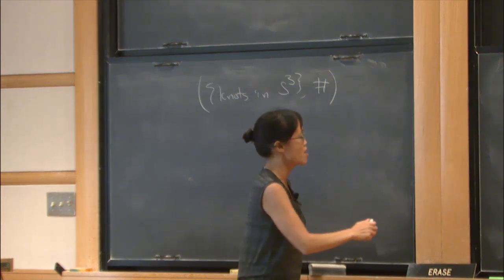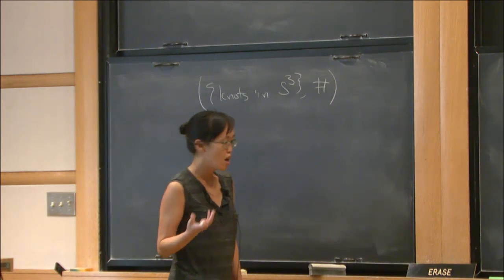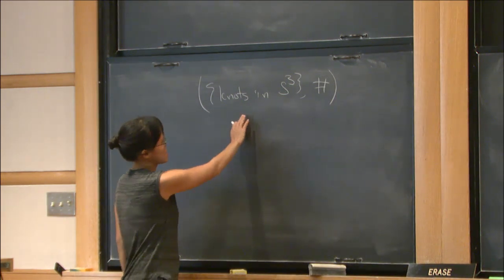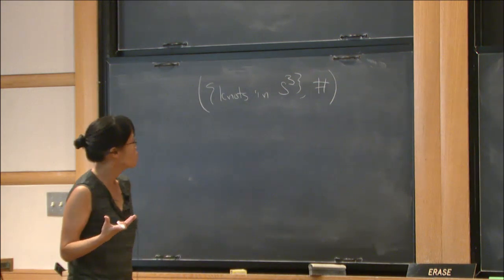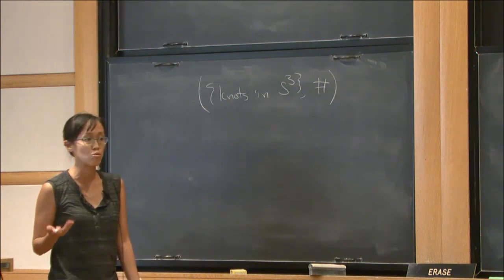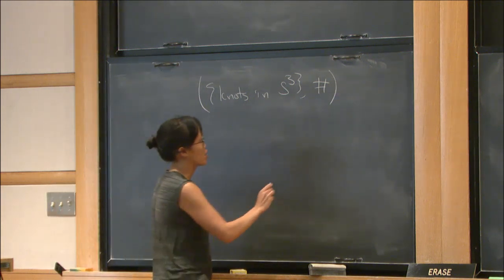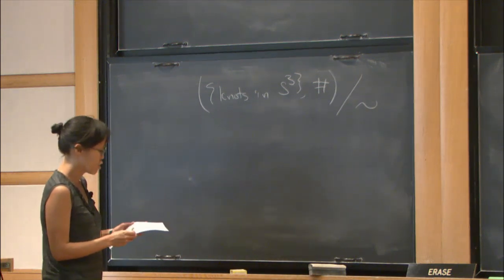The unknot, which is just the standard circle, is the identity in this monoid. But it turns out we're missing inverses. We'd rather have a group than a monoid, so the solution to this is we're going to quotient out by an equivalence relation called concordance.